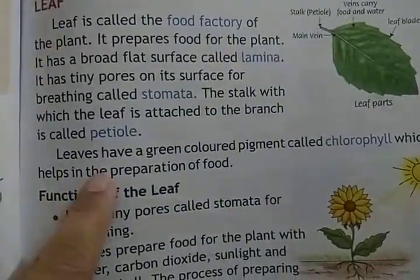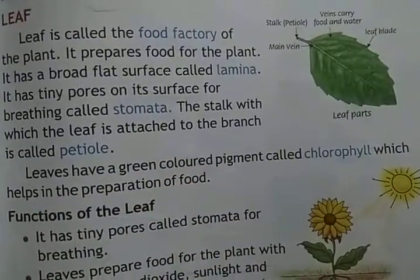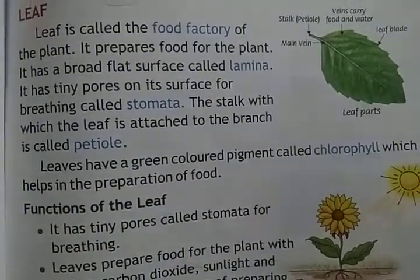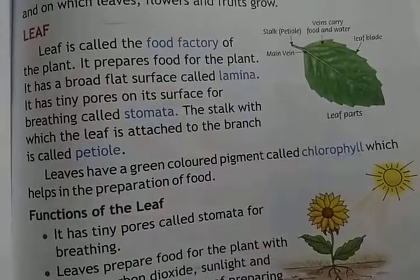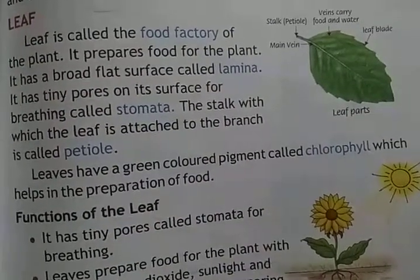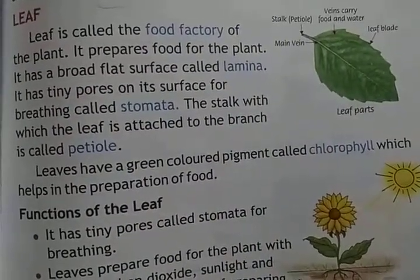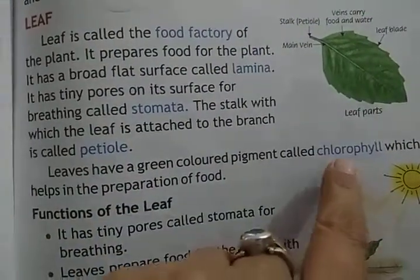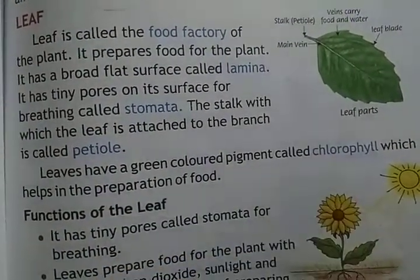Leaves have a green colored pigment called chlorophyll which helps in the preparation of food. We have a pigment in the leaves. The main work of chlorophyll is to give color to our leaves.